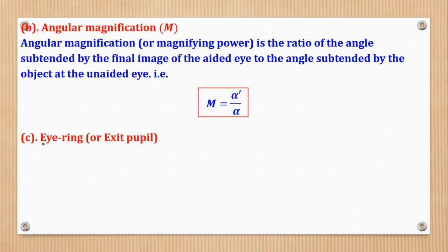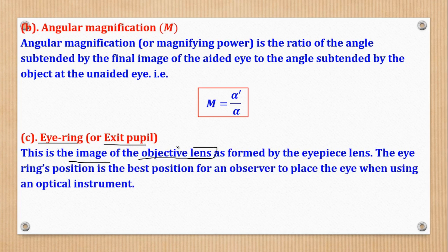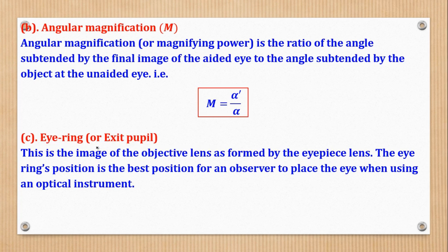A third common term is the eye ring or exit pupil. This is the image of the objective lens as formed by the eyepiece lens. The eye ring's position is the best position for an observer to place the eye when using an optical instrument. The eyepiece lens is used with the objective assumed to be the object, and the thin lens formula gives the image distance, which is the position of the eye ring.